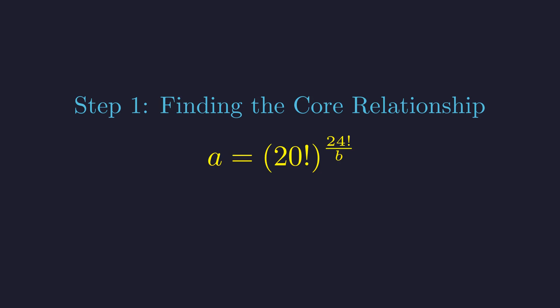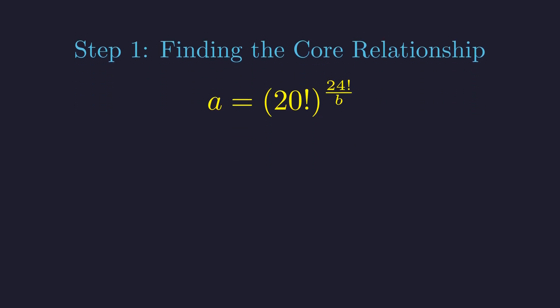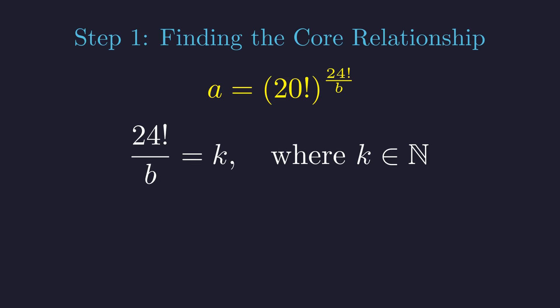This means for A to be a natural number, our exponent has to be a natural number too. In other words, 24 factorial divided by B needs to give us some natural number K. And what does this tell us about B? It has to divide 24 factorial perfectly, with no remainder. So B can only be one of the divisors of 24 factorial. This is our first major constraint.